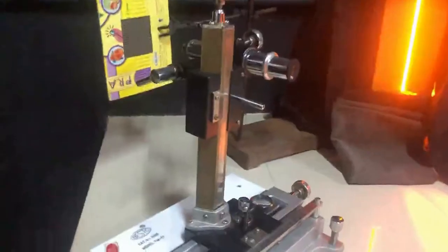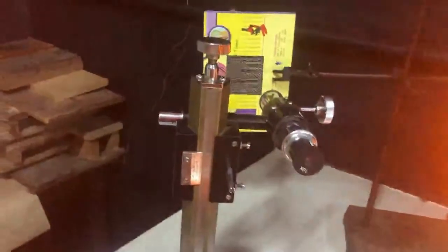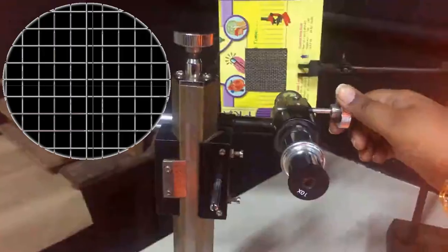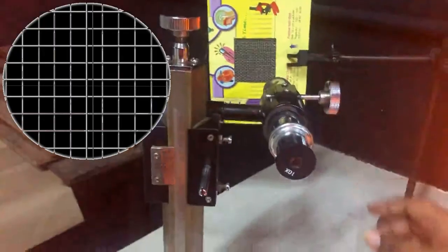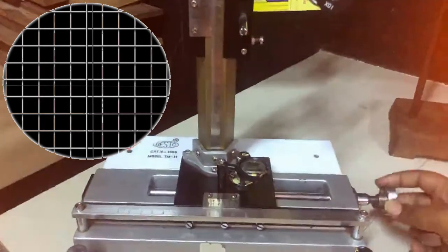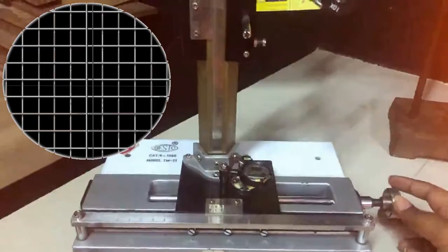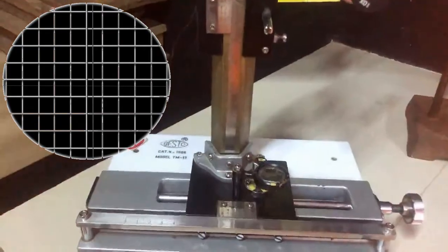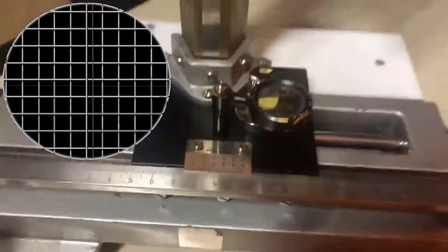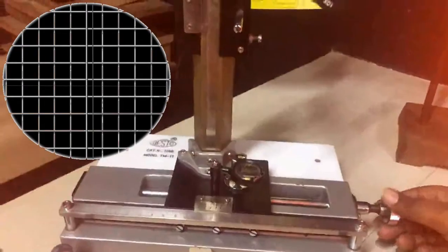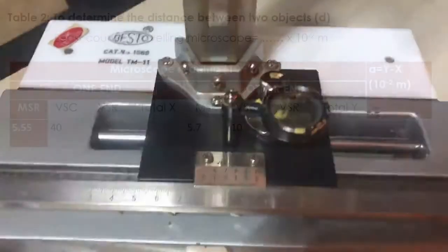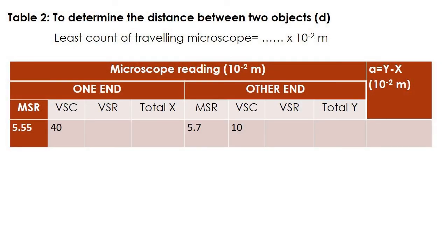Now measure the distance between two vertical lines in the wire mesh with the help of a traveling microscope. Focus the traveling microscope until you get a sharp image of the wire mesh. Place the cross wire at one end and take down the readings from the horizontal scale. Move the cross wire to the other end and note down the readings. The readings for the small d values are shown in this table.